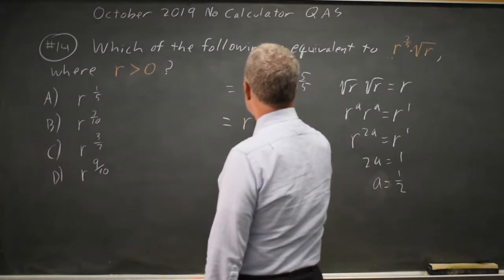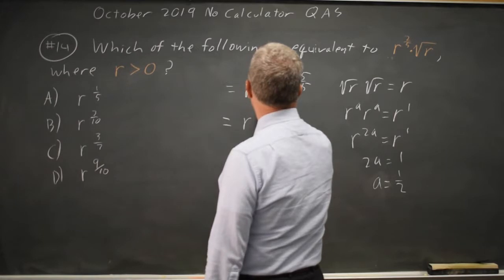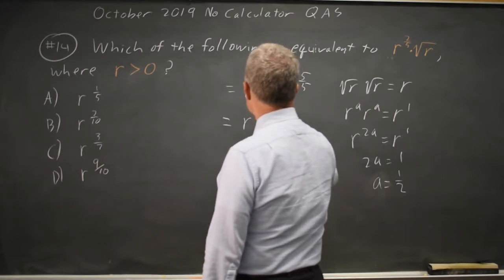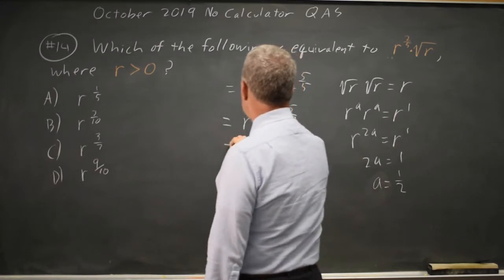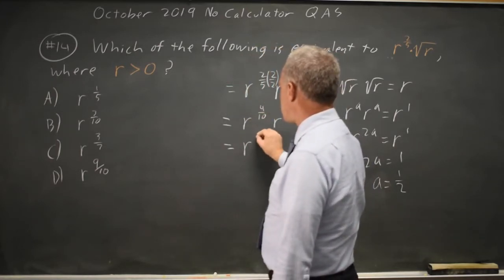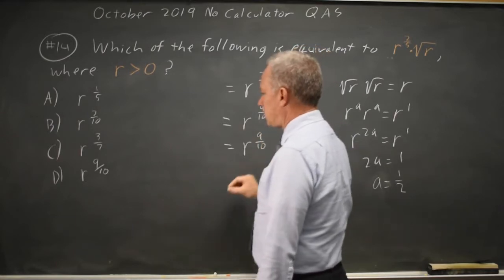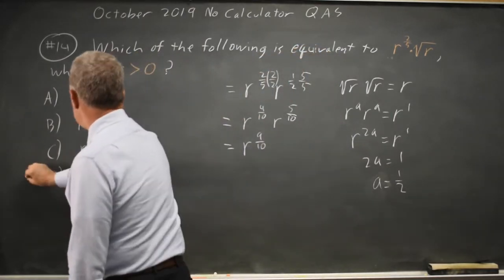So this is r to the 4 tenths, r to the 5 tenths, and powers of the same base you add exponents, that is r to the 9 over 10, which is choice D.